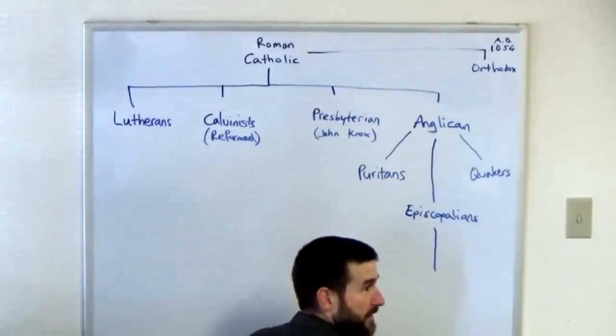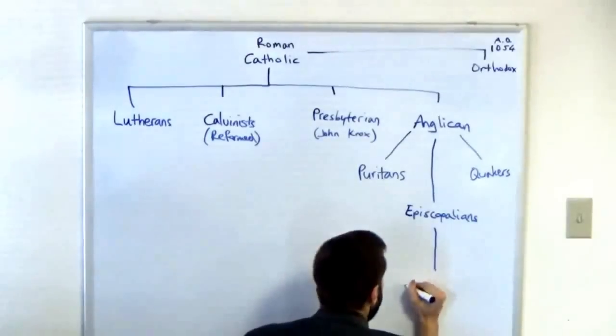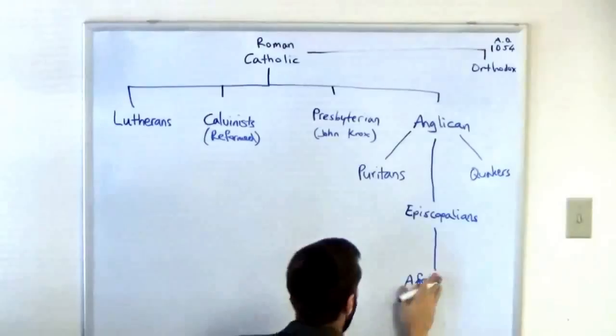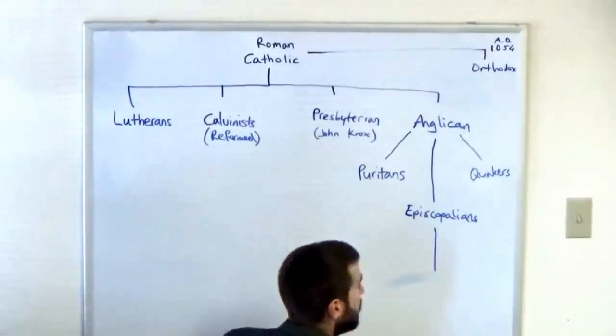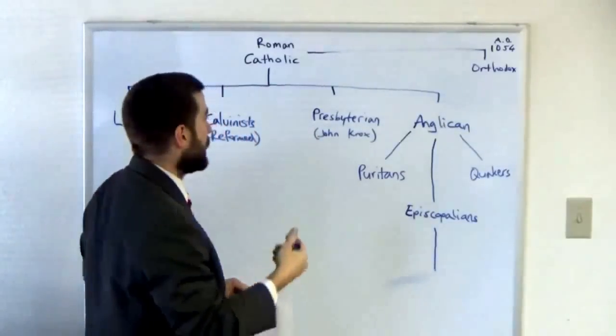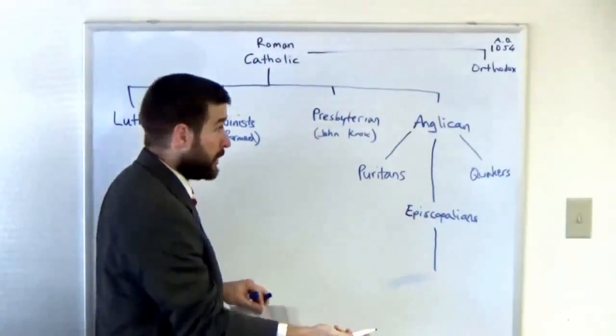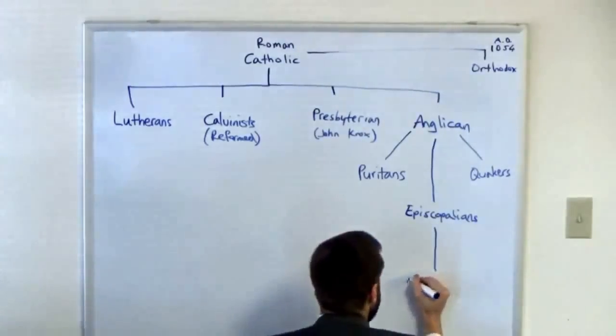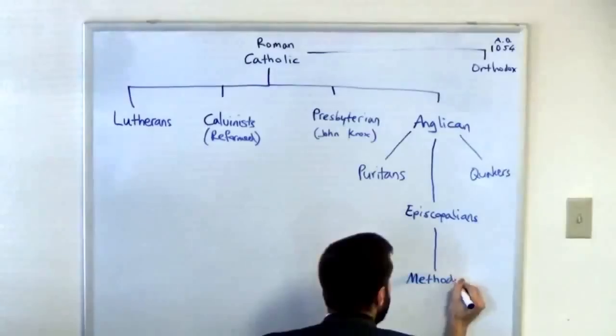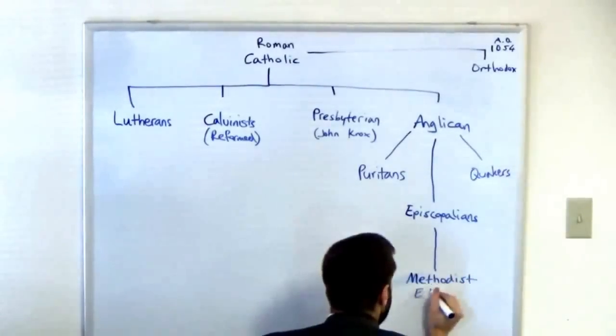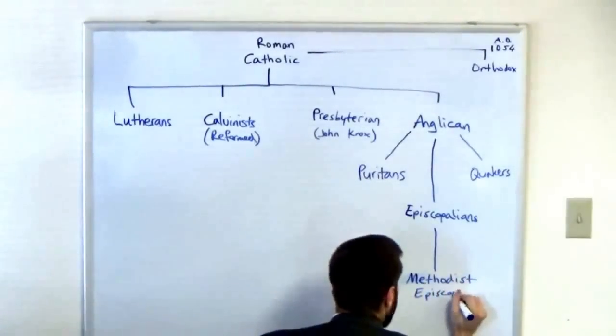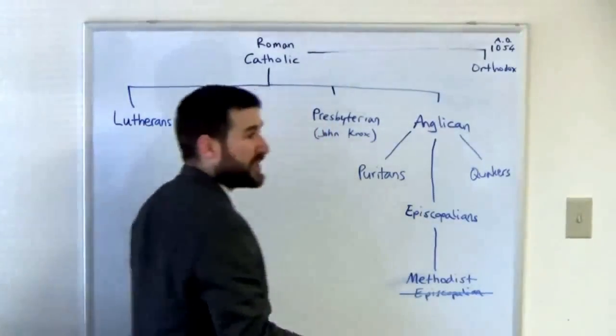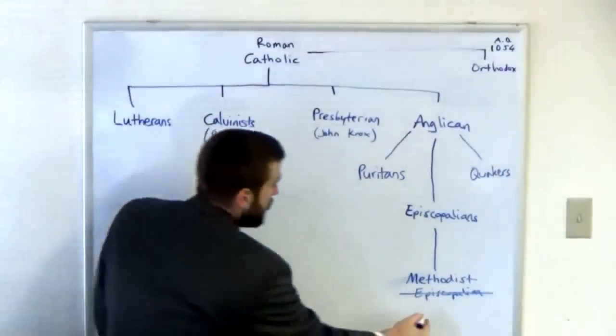There was a guy by the name of John Wesley who was one of these guys, Episcopalian, and then he said we need to get back to more biblical methods so he became a Methodist Episcopalian, which eventually they dropped the Episcopalian and just became known as Methodist.